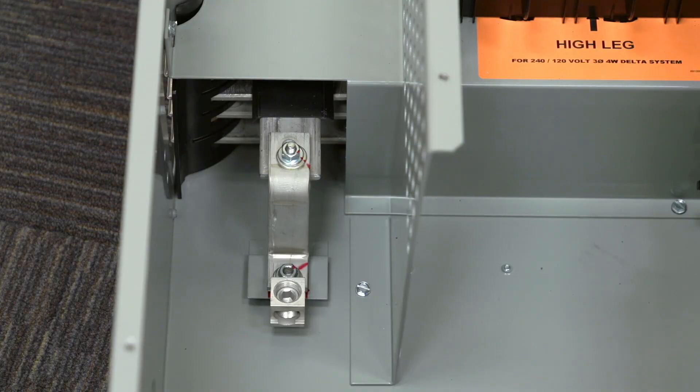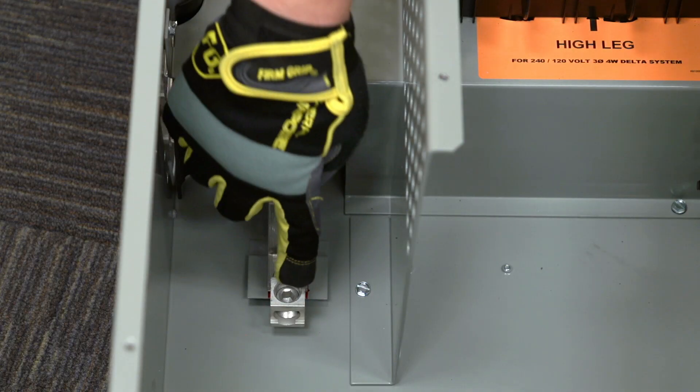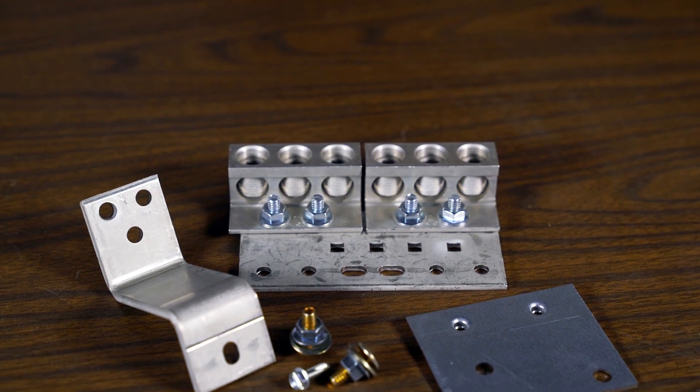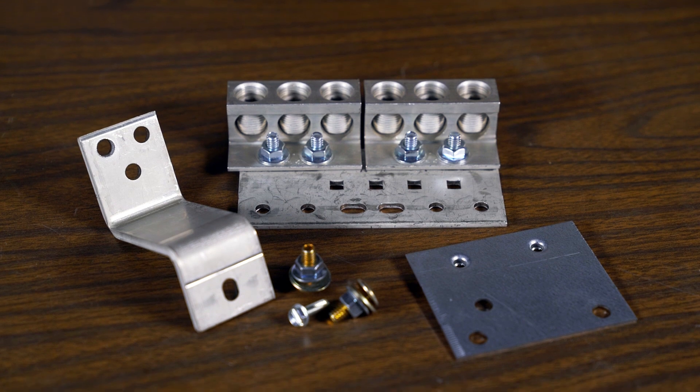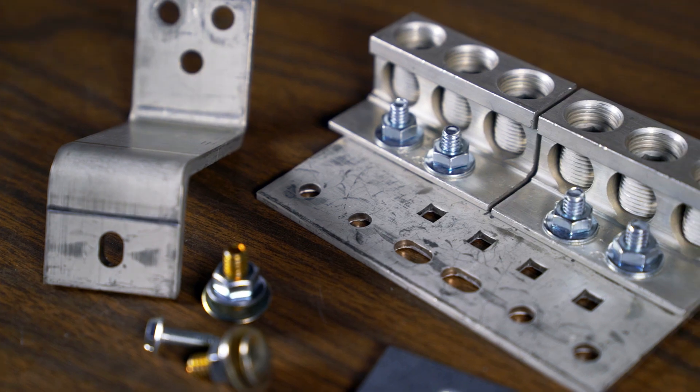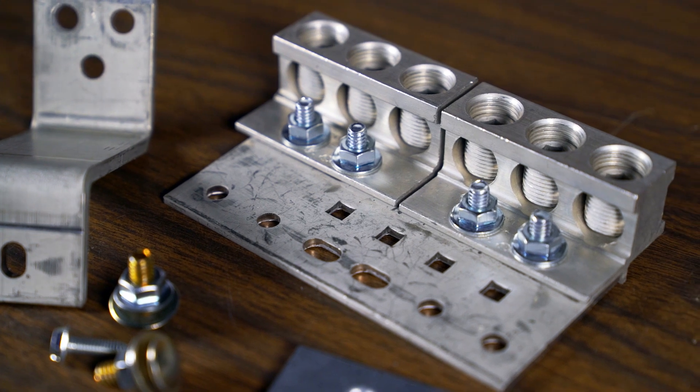In certain instances, larger ground lugs or a higher quantity of ground lugs may be required on a job. Some modules are compatible with ground lug extension kits, which can be used to increase the ground lug capabilities from what is factory installed. These kits can be purchased separately and installed in the field.